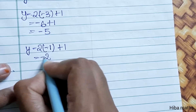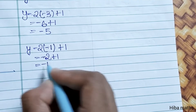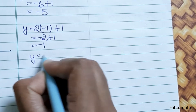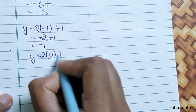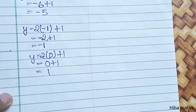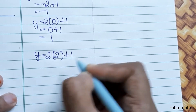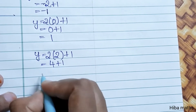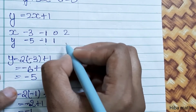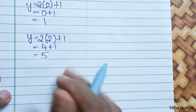When x is 0: y is equal to 2 into 0, that is 0 plus 1, so y equals 1. Point: (0, 1). When x is 2: y is equal to 2 into 2, that is 4 plus 1, so y equals 5. Point: (2, 5). The four points for Line 1 are: (minus 3, minus 5), (minus 1, minus 1), (0, 1), and (2, 5).